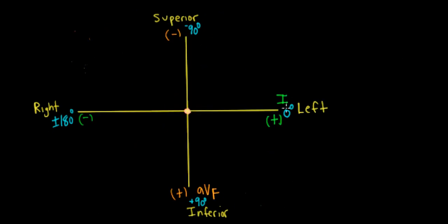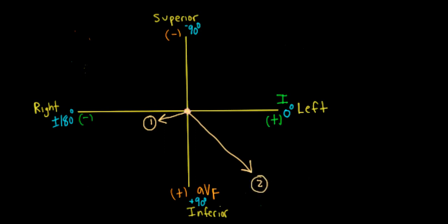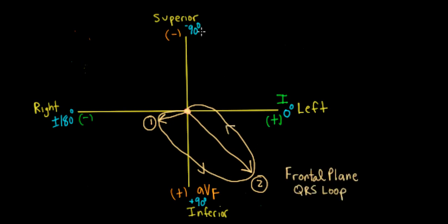We're going to put in our vector forces and generate a vector cardiogram loop for the QRS complex. Starting in the center, we have our rightward and inferior oriented septal forces, labeled as vector one. Then the LV forces, somewhat variable in the frontal plane, point inferiorly — labeled vector two — and it's bigger than vector one. We connect these vector heads with a vector cardiogram loop, indicating the multiple vectors not shown, and add arrows to show direction. This is our frontal plane QRS vector cardiogram loop.